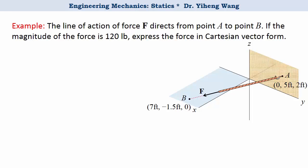Let's look at this example. The force has a magnitude of 120 pounds, and its direction is shown in this image as directed from point A to point B, and the coordinates of both point A and B are given. We need to express this force in its Cartesian vector form.